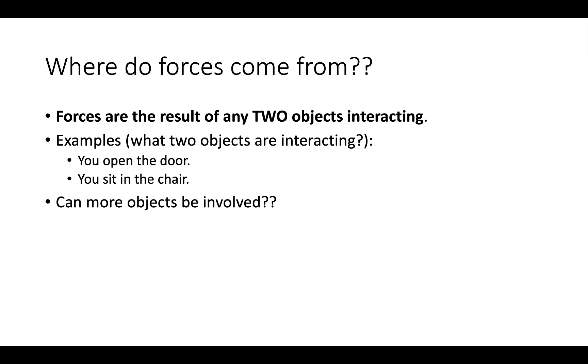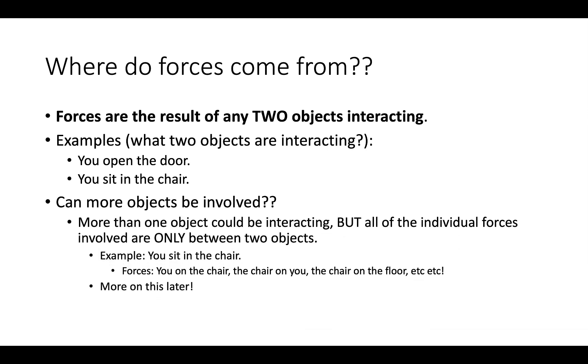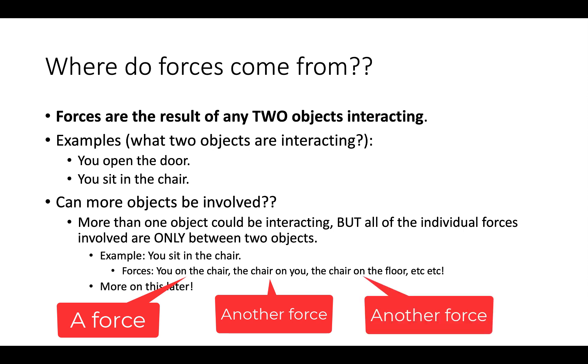Now there can be more objects involved in a scenario. If you're sitting in a chair, you're maybe resting on the desk as well, so there could be many objects in a system. But if we look at specific forces, they will always go back to only two objects interacting. For example, you're putting force on the chair, the chair is putting force on you, the chair is interacting with the floor and the floor on the chair. Any specific force in this scenario is linked back to only two objects.